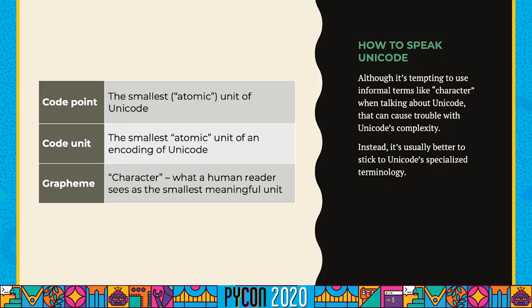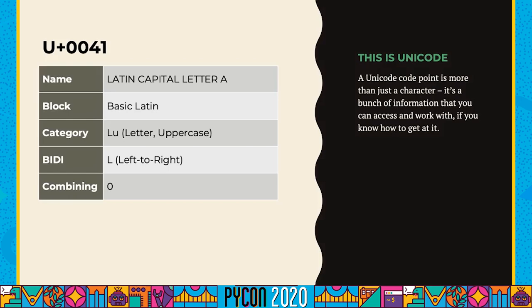Let's look at some examples of code points. Here's one that's probably familiar to a lot of people: Latin capital letter A. Its code point is 0041. Code points are always a number — by tradition, they're expressed in hexadecimal. It has a block and a category and some other information, which is just a subset of what Unicode has on this code point. Blocks are a way of organizing code points below the level of a plane — contiguous sets of related code points. The basic Latin block contains code points for the Latin alphabet.